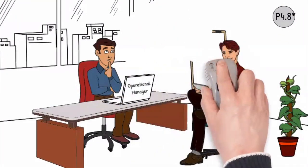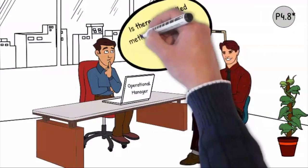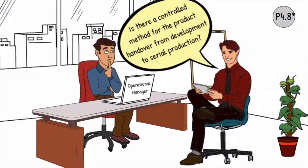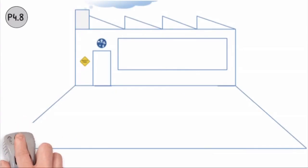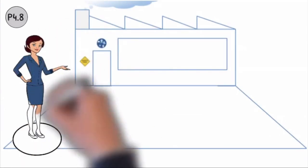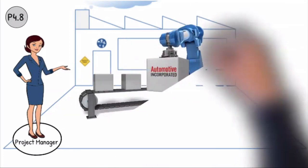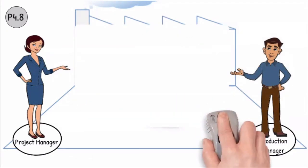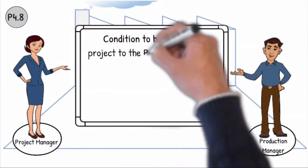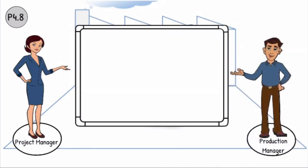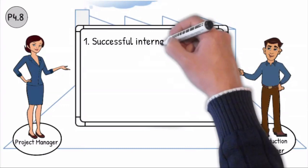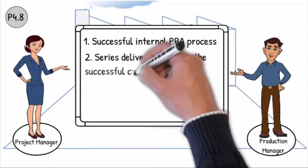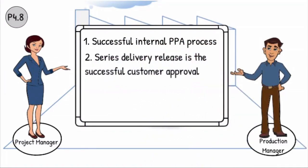Question P4.8: Is there a controlled method for the product handover from development to serial production? We have a process for transferring the work results from the project team to the production team. We have also implemented measures to secure the production startup, which are specified in our project closure handover process and must achieve the following conditions: 1. Successful internal PPA process. 2. Series delivery releases and successful customer approval.